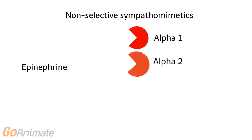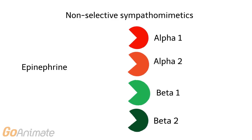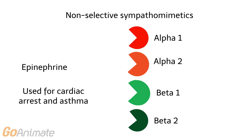Some sympathomimetics, like epinephrine, are non-selective and affect multiple receptors. Epinephrine affects all four types of receptors and is used to treat cardiac arrest and asthma.